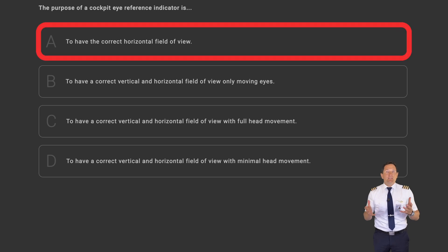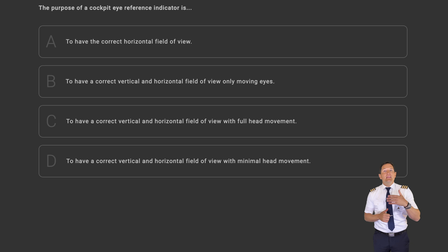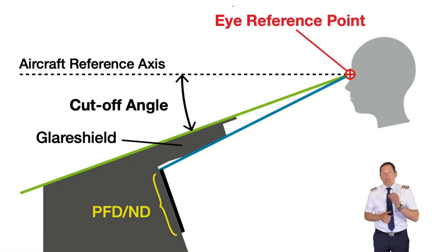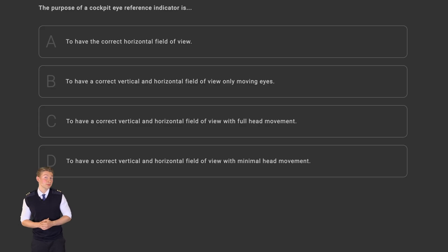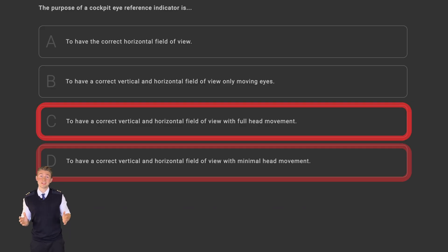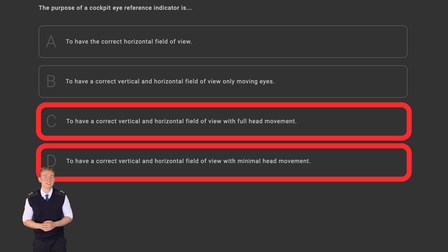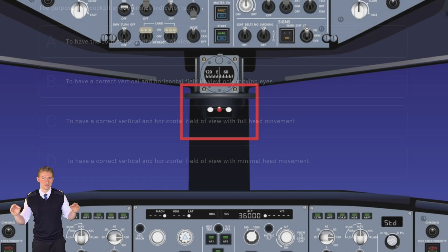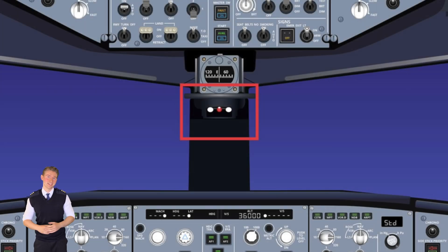Okay let's rule out the incorrect answers. Answer A doesn't make any sense, because you don't just scan horizontally, even more you're scanning vertically, you're constantly going up and down from the outside to the inside onto the primary flight instruments, only using your eyes. Correct Joe. Eyes is a good point, meaning answers C and D are also incorrect, since this is an eye reference indicator and not a head reference indicator.